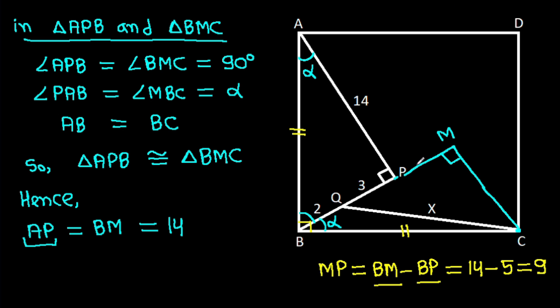And also, PB will be equal to MC, and PB is 3 plus 2, that is 5. So MC will also be 5.